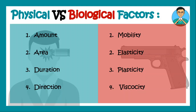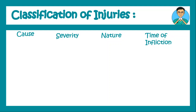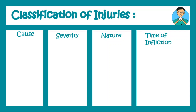Injury can be classified based on the cause of injury, based on the severity of the injury, on the nature of the injury, and on the time of infliction. Cause involves mechanical causes, chemical causes, thermal causes, etc.